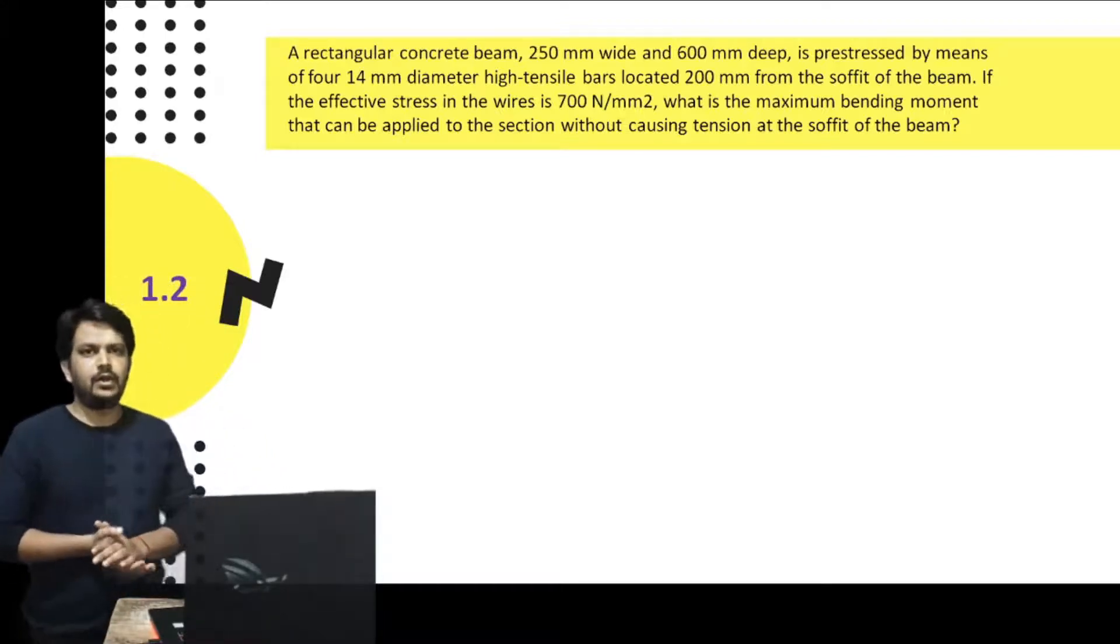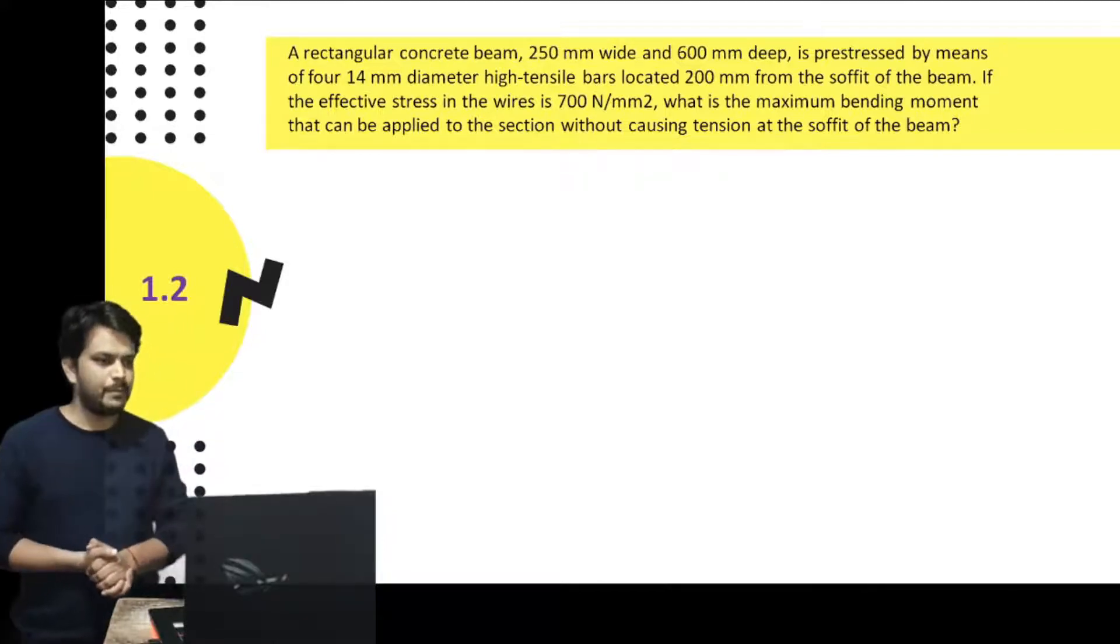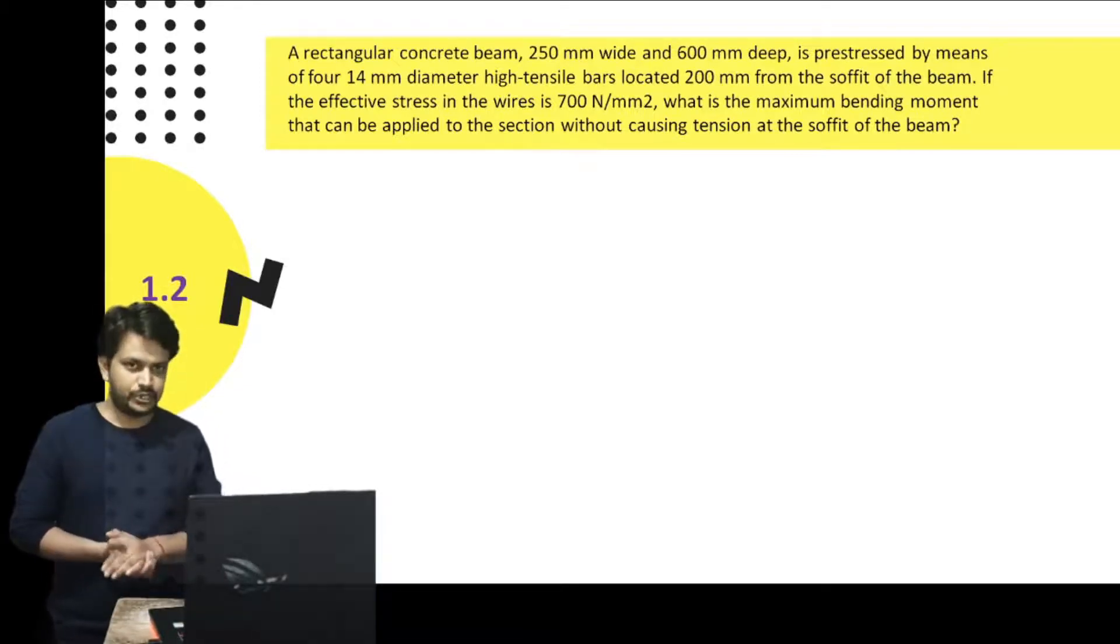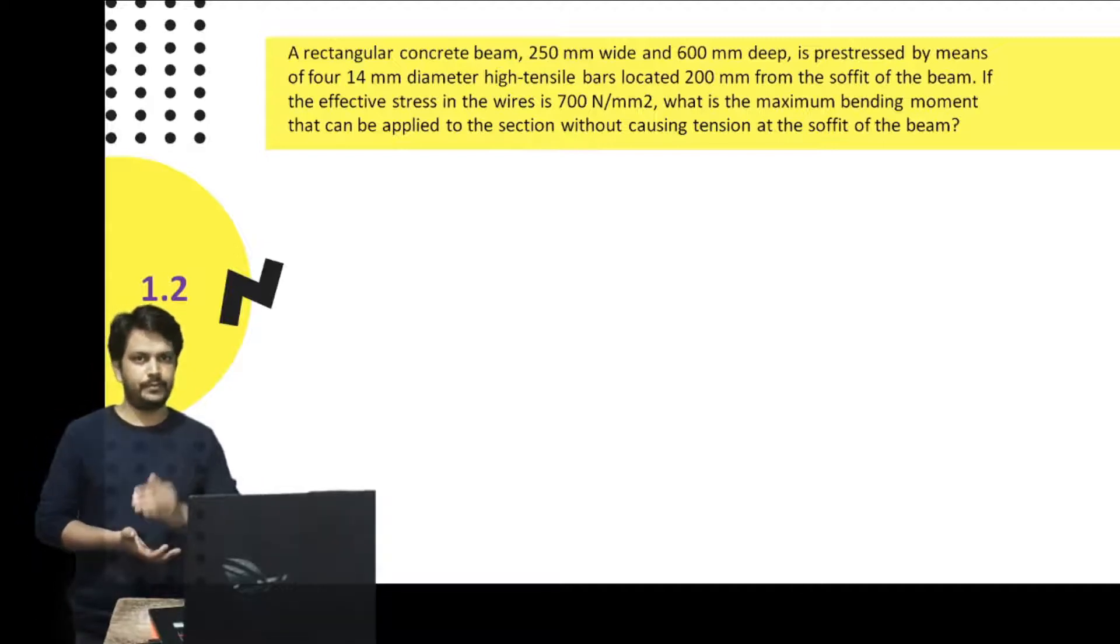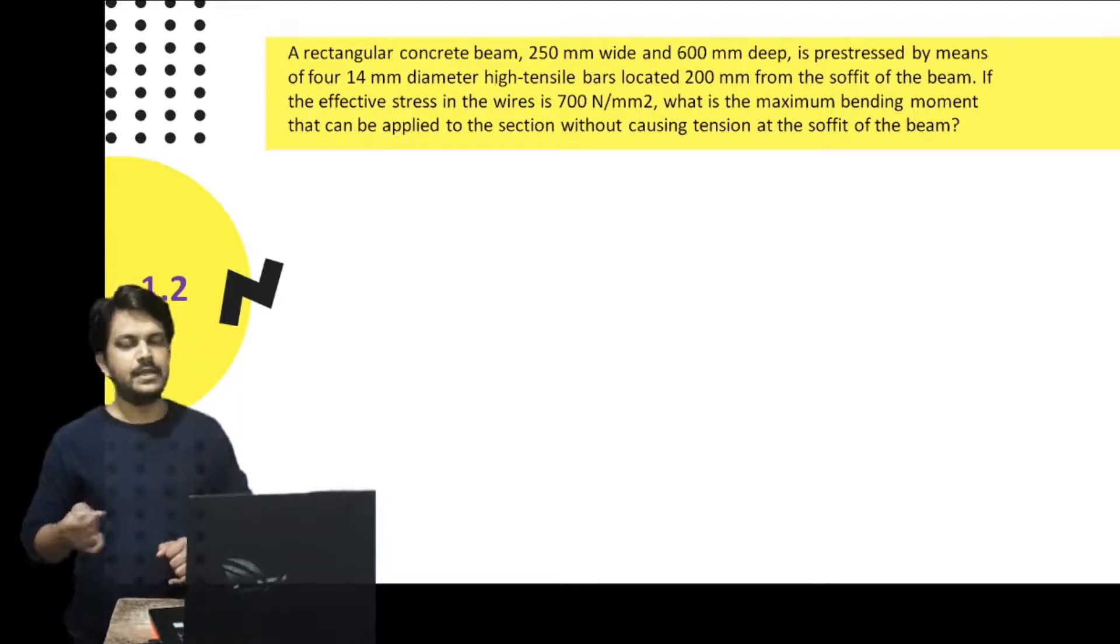Here is another example on prestressing. A rectangular concrete beam, 250 mm wide and 600 mm deep, is prestressed by means of four tendons of 14 mm diameter which are located 200 mm from the soffit. The initial prestress in these tendons is 700 MPa. We need to find the maximum bending moment that can be applied to the section without causing tension at the soffit of the beam. We need tensile stresses to be zero at the bottom fiber at the stage of service.